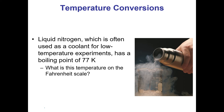Liquid nitrogen, often used as a coolant for low-temperature experiments, has a boiling point of 77 Kelvin, and we want to know what this temperature is on the Fahrenheit scale. Starting with 77 Kelvin, we don't have a direct way to go from Kelvin to Fahrenheit, so we go from Kelvin to Celsius first and then to Fahrenheit. Taking 77 Kelvin and subtracting 273, we get negative 196 degrees Celsius.